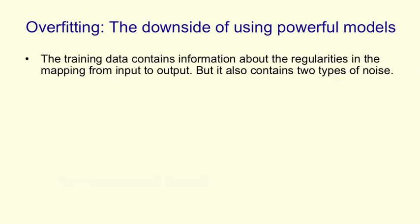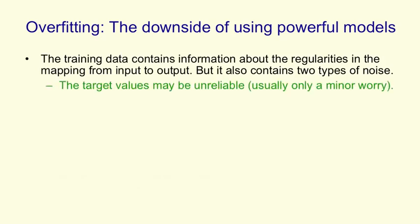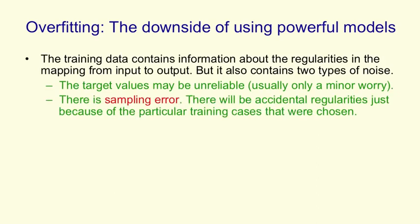The second set of issues is to do with how well the network generalizes to cases it didn't see during training. And the problem here is that the training data contains information about the regularities in the mapping from input to output, but it also contains two types of noise. The first type of noise is that the target values may be unreliable. And for neural nets, that's usually only a minor worry. The second type of noise is the sampling error. If we take any particular training set, especially if it's a small one, there'll be accidental regularities that are caused by the particular cases that we chose.